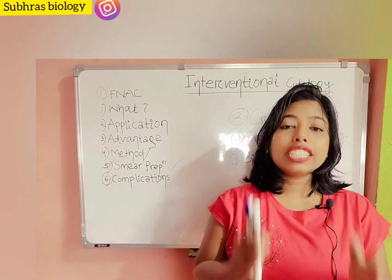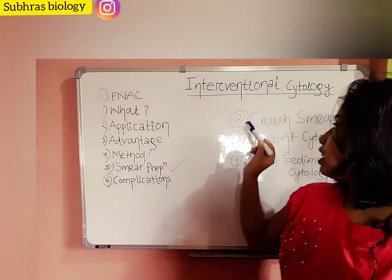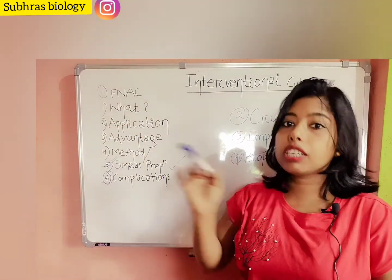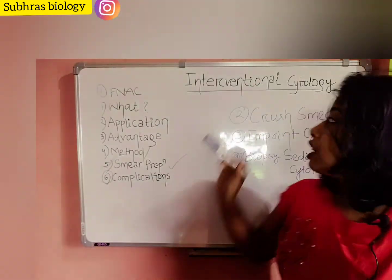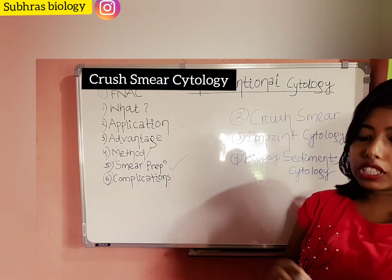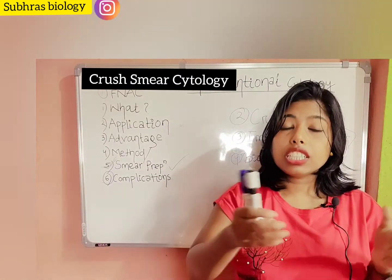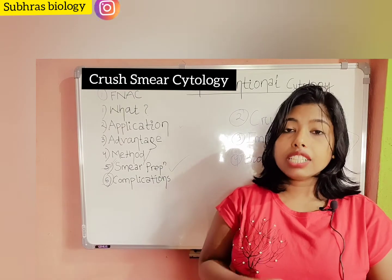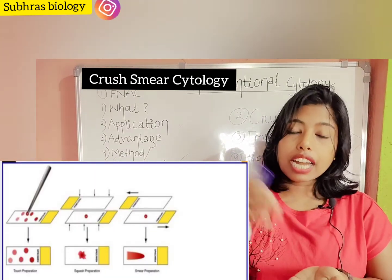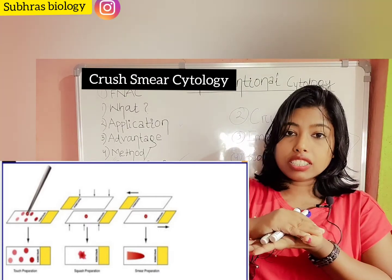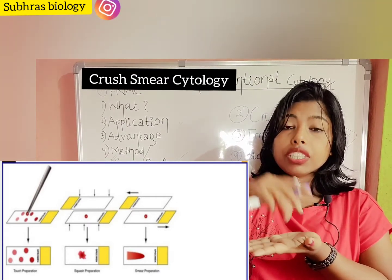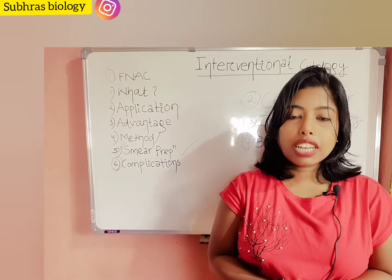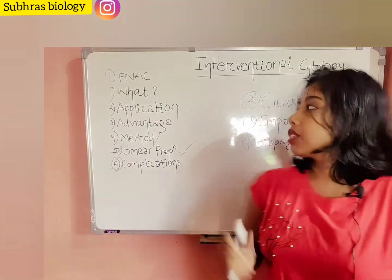To recap, interventional cytology is divided into FNAC, crush smear cytology, imprint cytology, and biopsy sediment cytology. We have completed everything about FNAC. Now we move to crush smear cytology: you take two slides, place a small piece of tissue on one slide, and use the other slide to crush it, so that the tissue matrix is flattened. This is crush smear cytology.